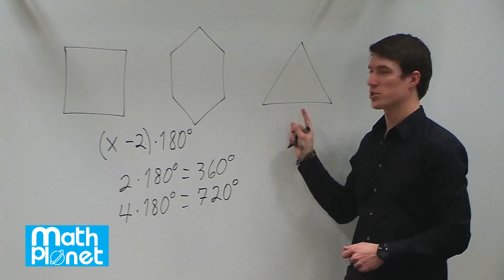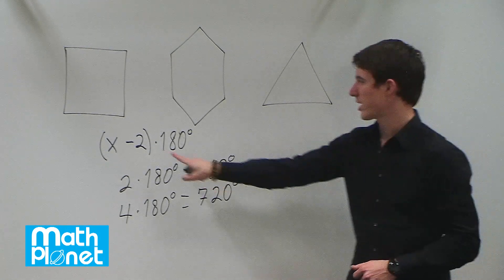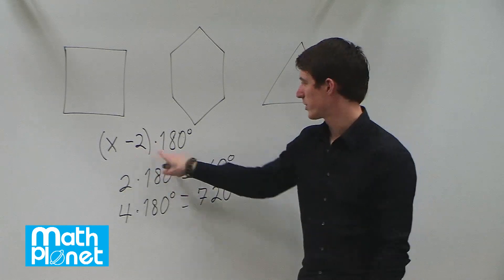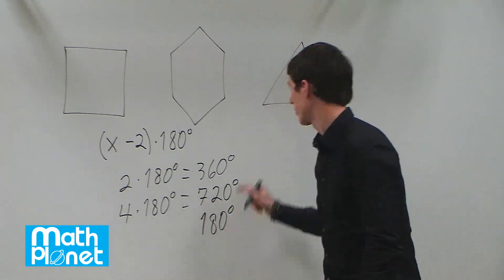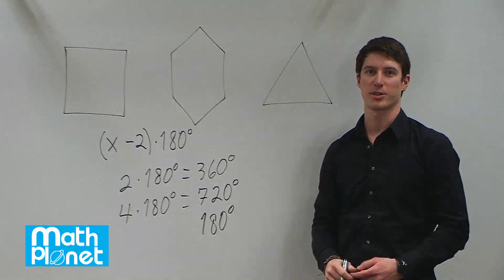And lastly we have a three-sided shape or a triangle. So we say three minus two which is just one. One times 180 is just 180 degrees. So the interior sum of the angles for a triangle is 180 degrees.